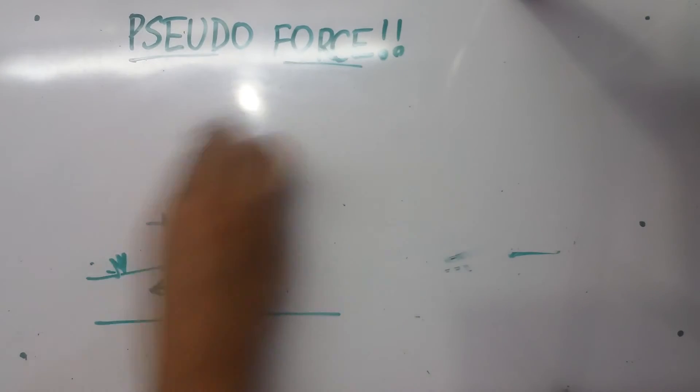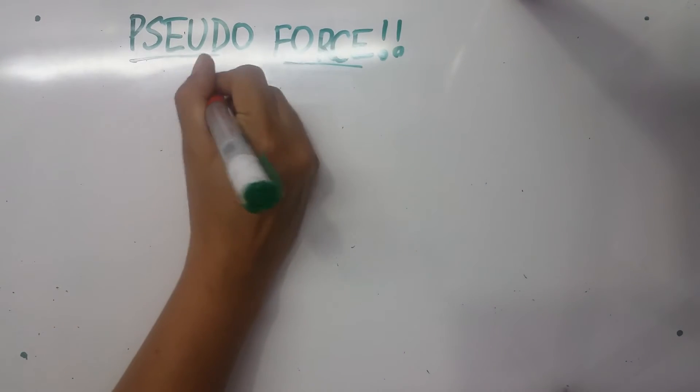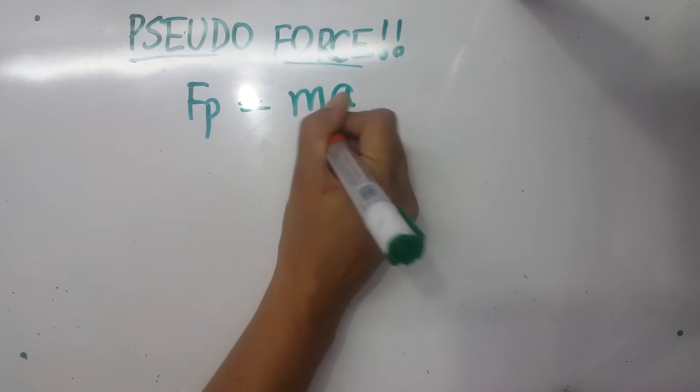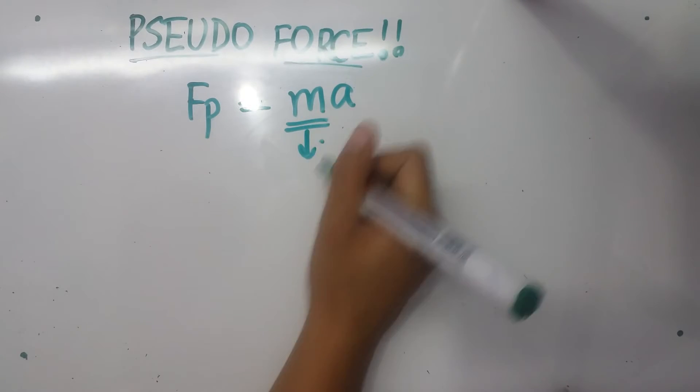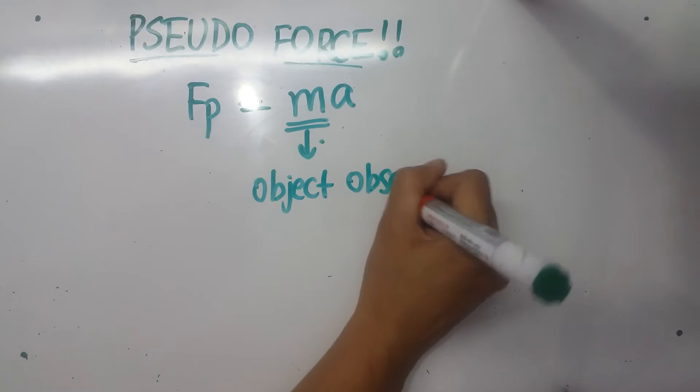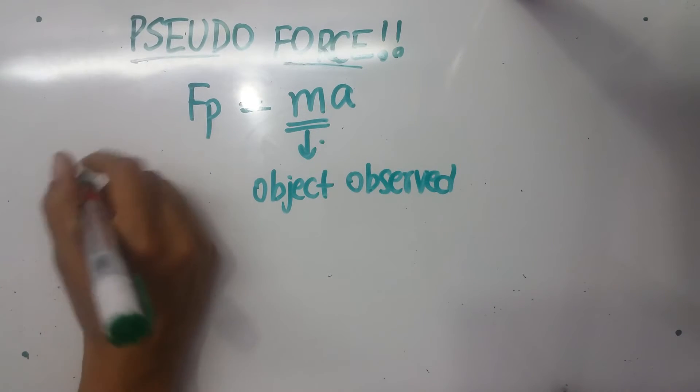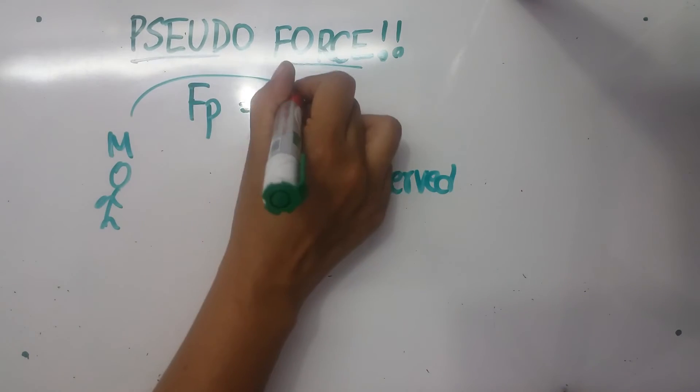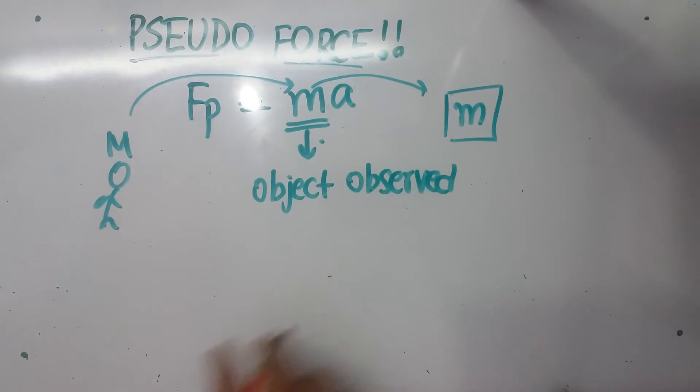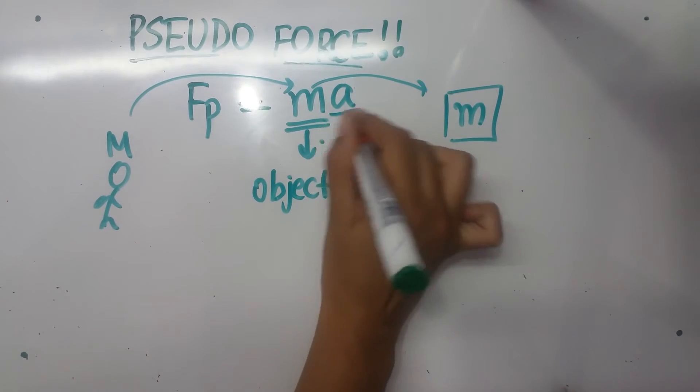Now a very important point not to be missed. Let's say F pseudoforce, Fp, equals mass times acceleration. First of all, this mass is of the object being observed. If I'm observing a man with mass M, I'll use capital M. If I'm observing a small cart with mass m, I'll use small m. Basically, this mass is the mass of the object observed.